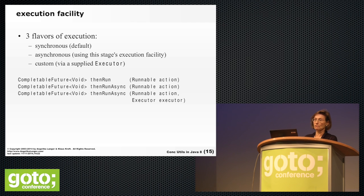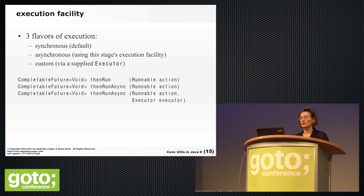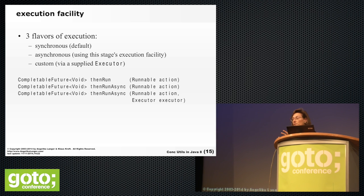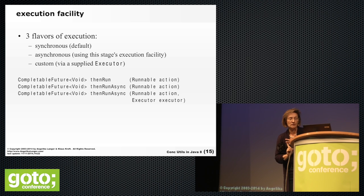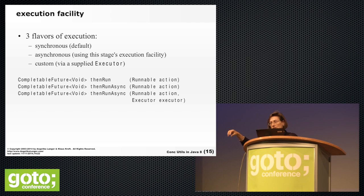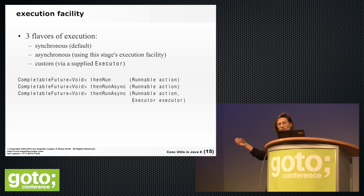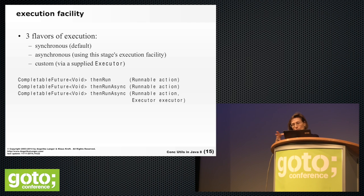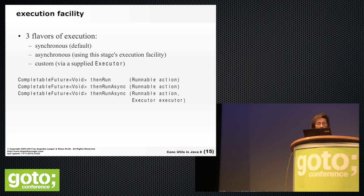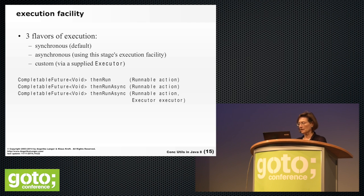Each of those three flavors exists in three further variants, making nine functions total. Using thenRun as the example: thenRun executes the reaction synchronously (the pool thread that produced the result also executes the runnable), thenRunAsync executes it in a different pool thread, and thenRunAsync with an Executor executes it in a specific pool of your choice.